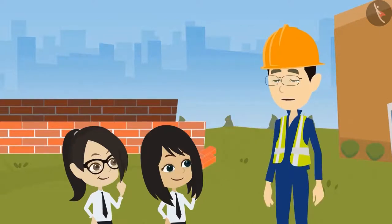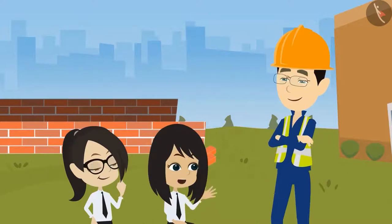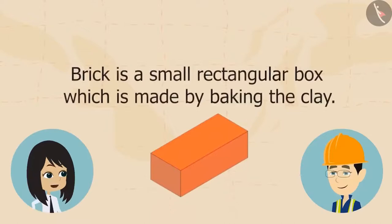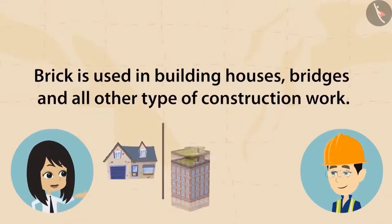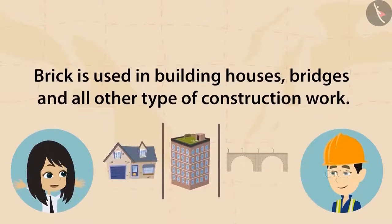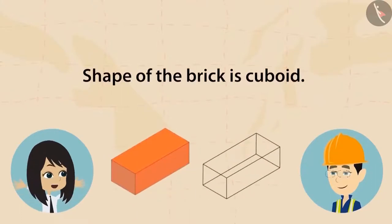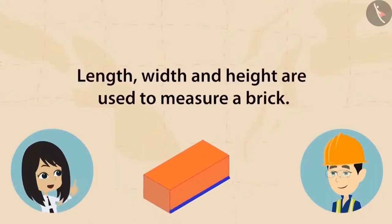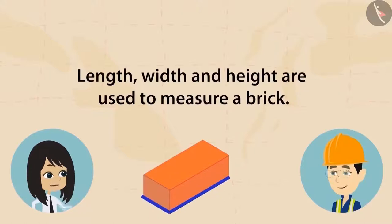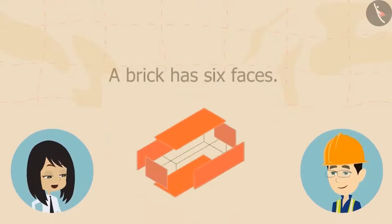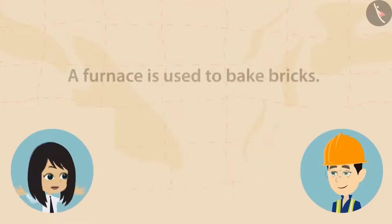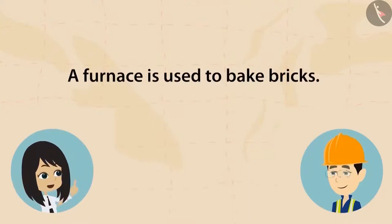Last time you told us: a brick is a small rectangular box which is made by baking the clay. Brick is used in building houses, bridges, and all other types of constructions. The shape of a brick is a cuboid. Length, breadth, and height are used to measure a brick. A brick has 12 edges. A brick has 6 faces. A furnace is used to bake the bricks.